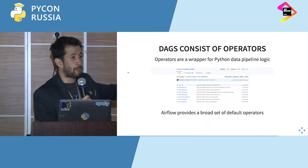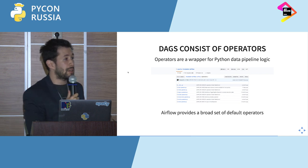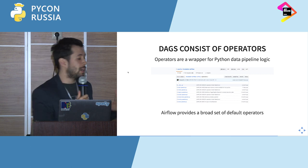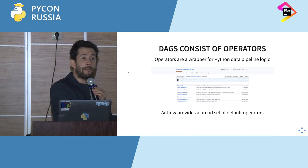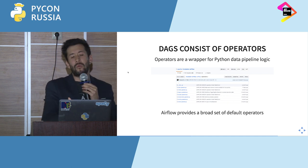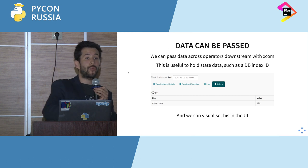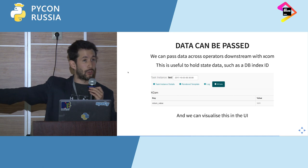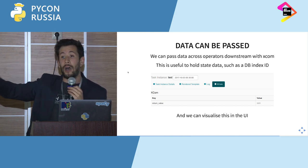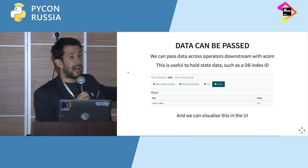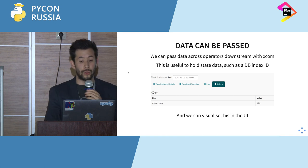Each unit of work is called an operator, and operators are basically wrappers for Python logic or any other type of logic — logic to connect to an HDFS system, download tweets, download pictures, etc. Airflow provides a broad set of default operators, and the one you'll find yourself using most often is the Python operator. Data can also be passed downstream and held across the context of one DAG execution using a feature called XCom. This means you can give an ID to the beginning task and have operators pass the output of each one forward through the pipeline.